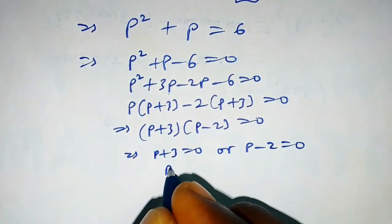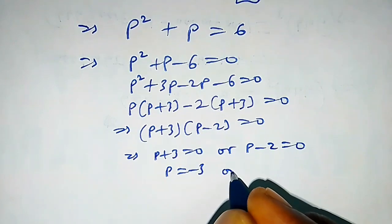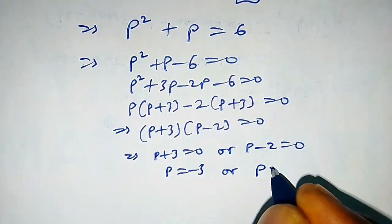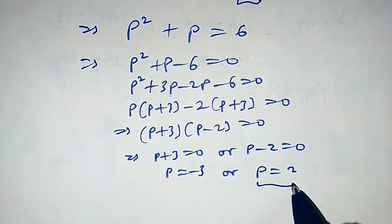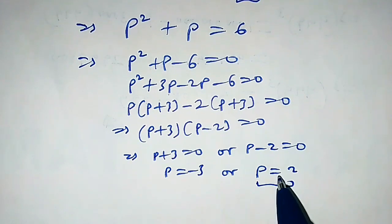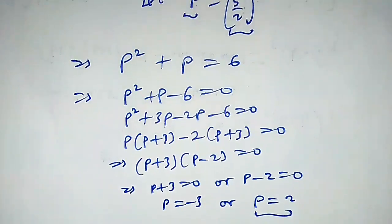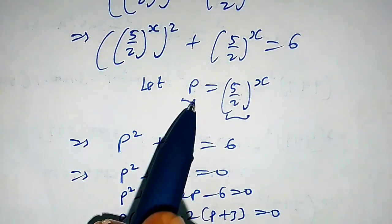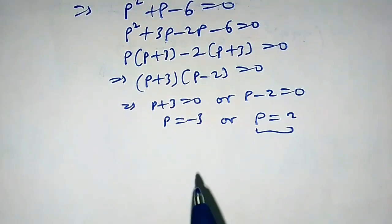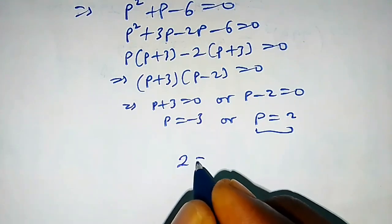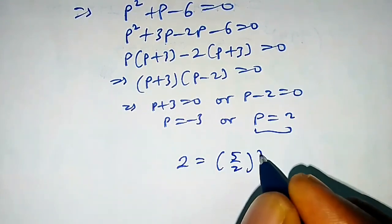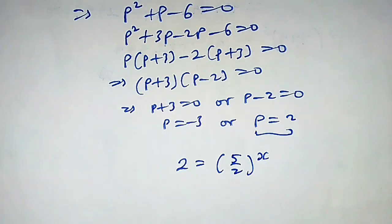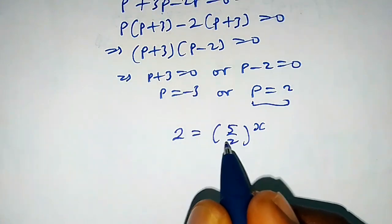This gives p plus 3 equals 0 or p minus 2 equals 0, so p equals negative 3 or p equals 2. When p equals 2, we substitute back: 2 equals (5 over 2) raised to the power x. Taking the natural logarithm of both sides, we get ln 2 equals ln (5/2) raised to the power x.